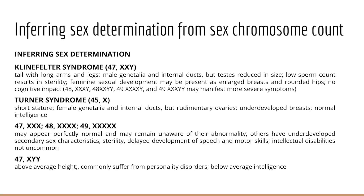Around the same time, scientists discovered Turner syndrome. Affected individuals have female external genitalia, internal ductwork, and very small ovaries. They're commonly short in stature — typically under five feet — have underdeveloped breasts, and most often have normal intelligence. Patients are missing their second sex chromosome, having one X instead of two, with a chromosome count of 45. The karyotypes and their corresponding sexual phenotypes led scientists to conclude that the Y chromosome determines maleness in humans, with the absence of the Y chromosome determining female nature even if only a single X chromosome is present.